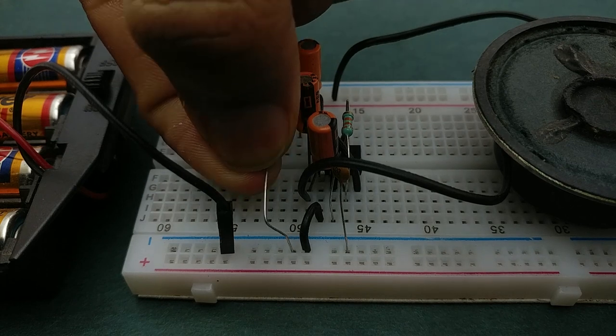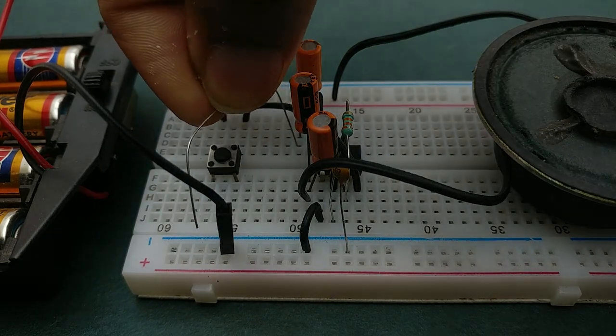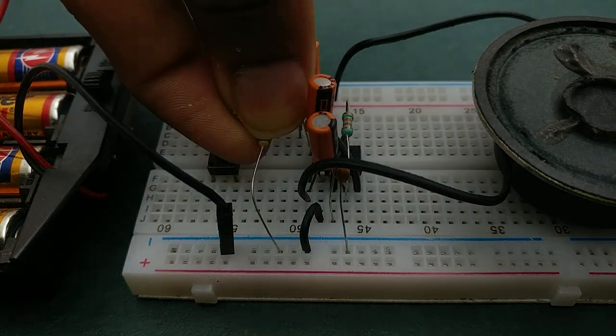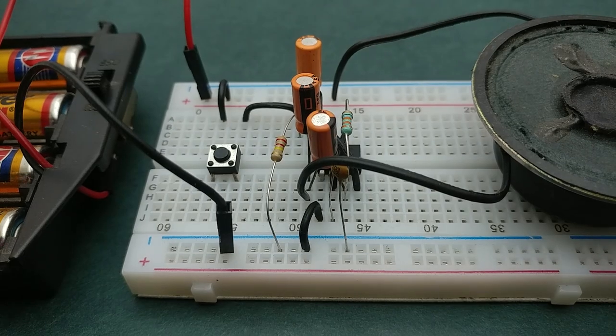You can also change the timing between successive firing by changing this resistor. And this is how the output sounds for a 220 kilo ohm resistor.